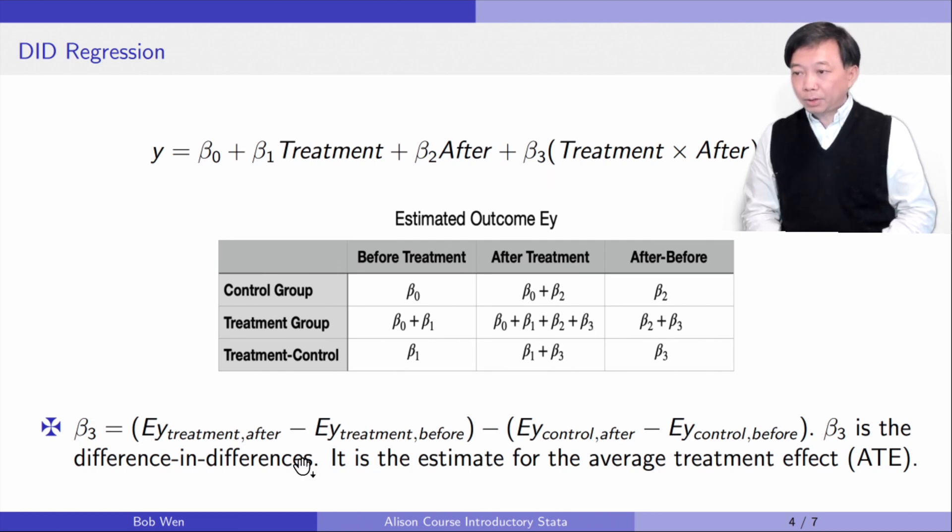For instance, both groups of people may experience an economic downturn that is unobserved or unmeasured. It is not captured by the model. Using the difference in differences method, we can account for these unobserved influences as if they are included in the model. It is important because these unobserved factors may lead to omitted variable bias if they are left out of the model.